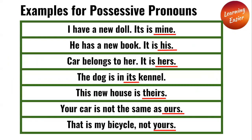Examples for possessive pronouns. I have a new doll. It's mine. Mine is a possessive pronoun in that sentence because it shows that the doll belongs to the person.